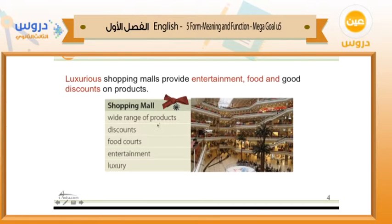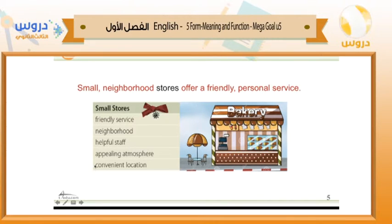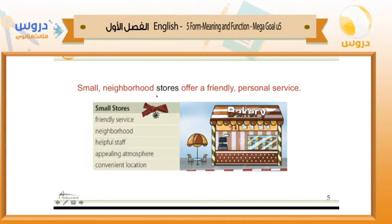Now, what about small stores? Small stores offer: friendly service, neighborhood location, helpful staff, appealing atmosphere, and convenient location. Friendly service — because you won't find too many people inside. Convenient location means it's near your house and easy to reach. Helpful staff are the workers inside these shops. Appealing atmosphere means a pleasing atmosphere. For example: 'Small neighborhood stores offer friendly, personal service.'